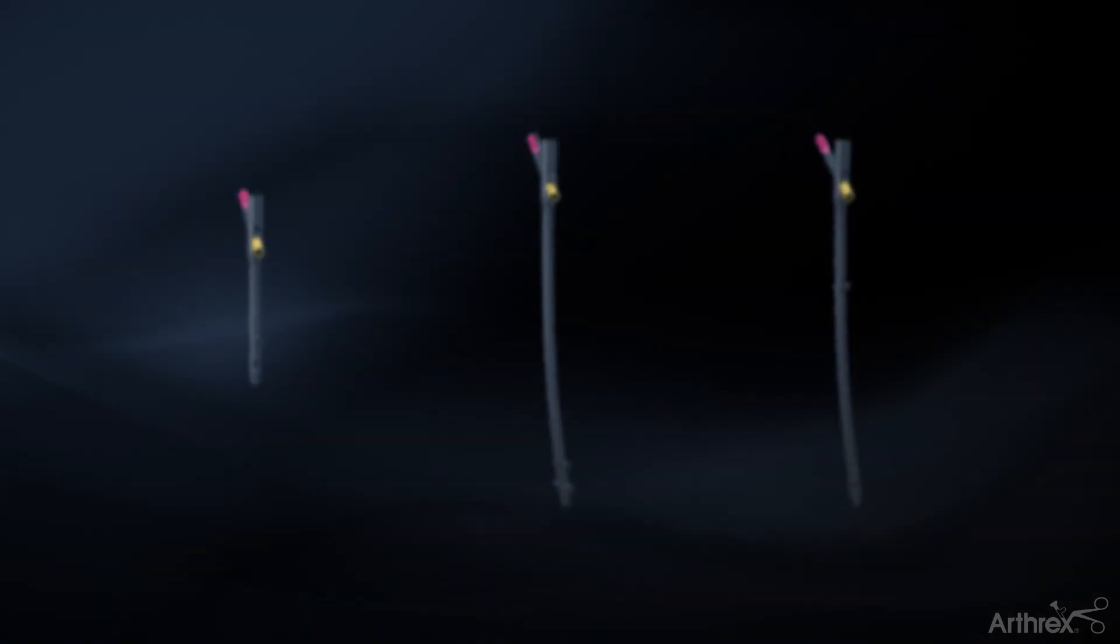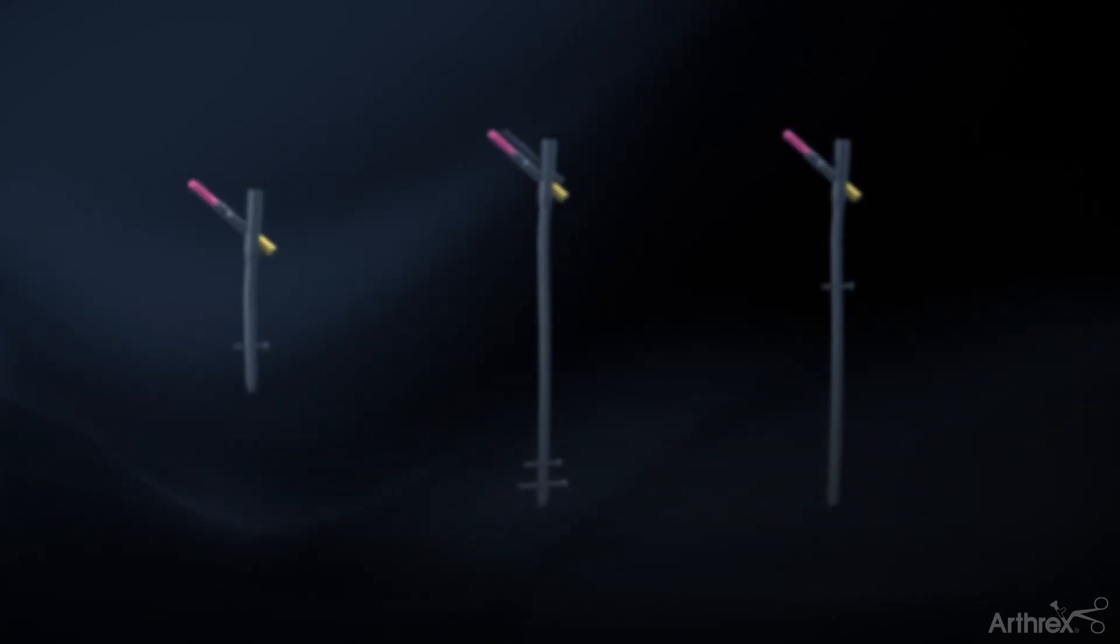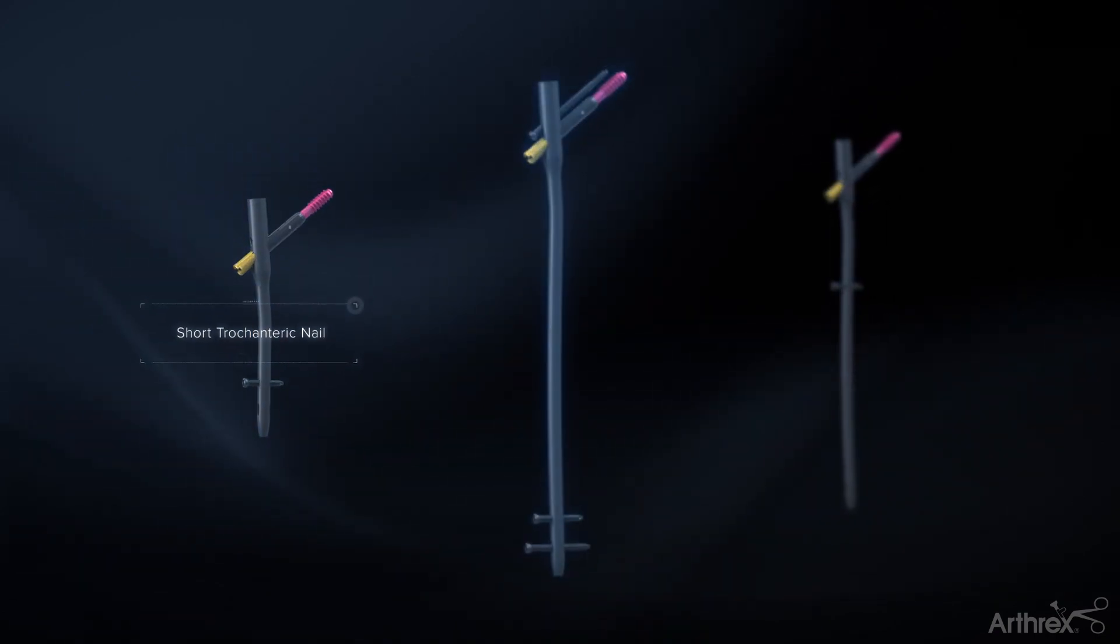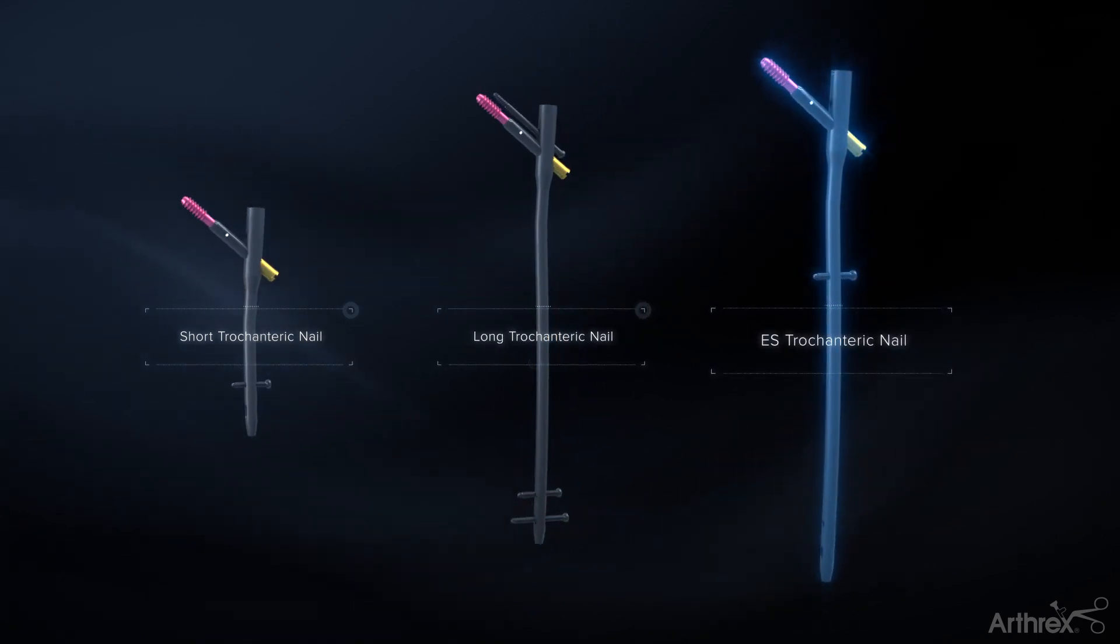The Arthrix Trochanteric nail system is available in three nail types: the short nail, long nail, and innovative ES nail.